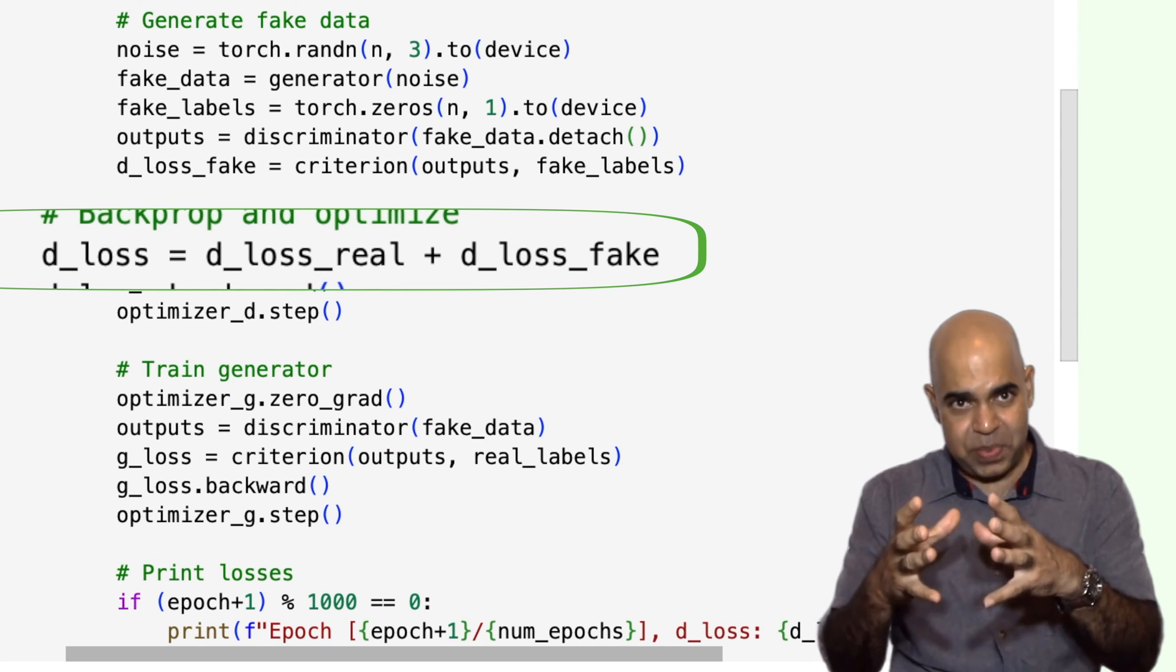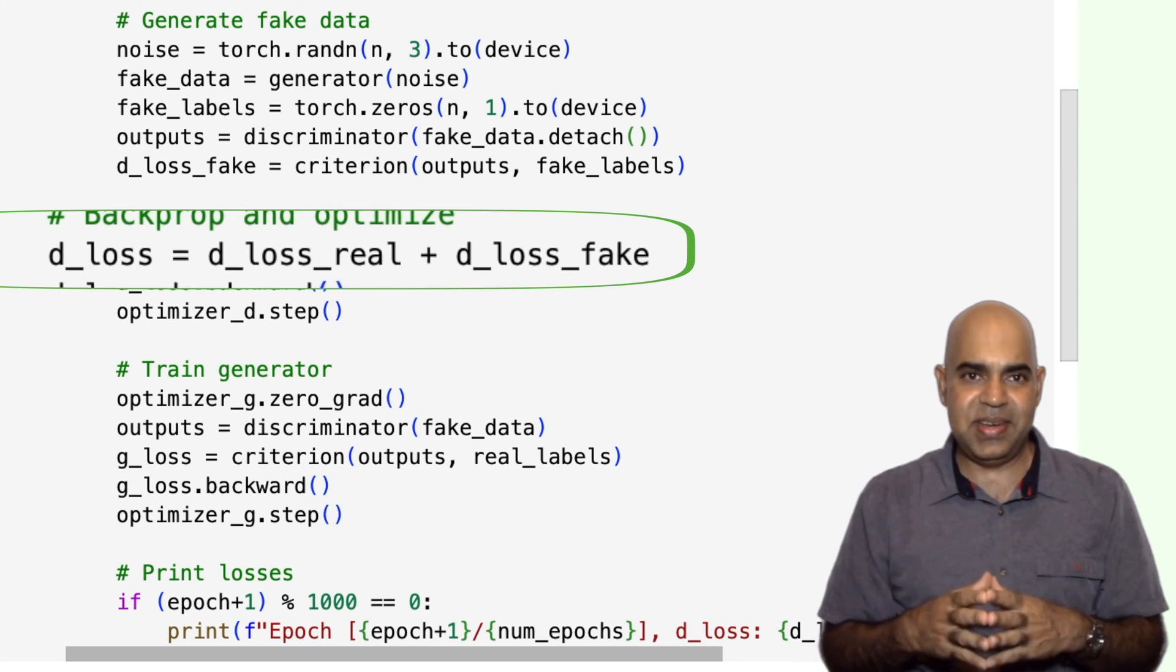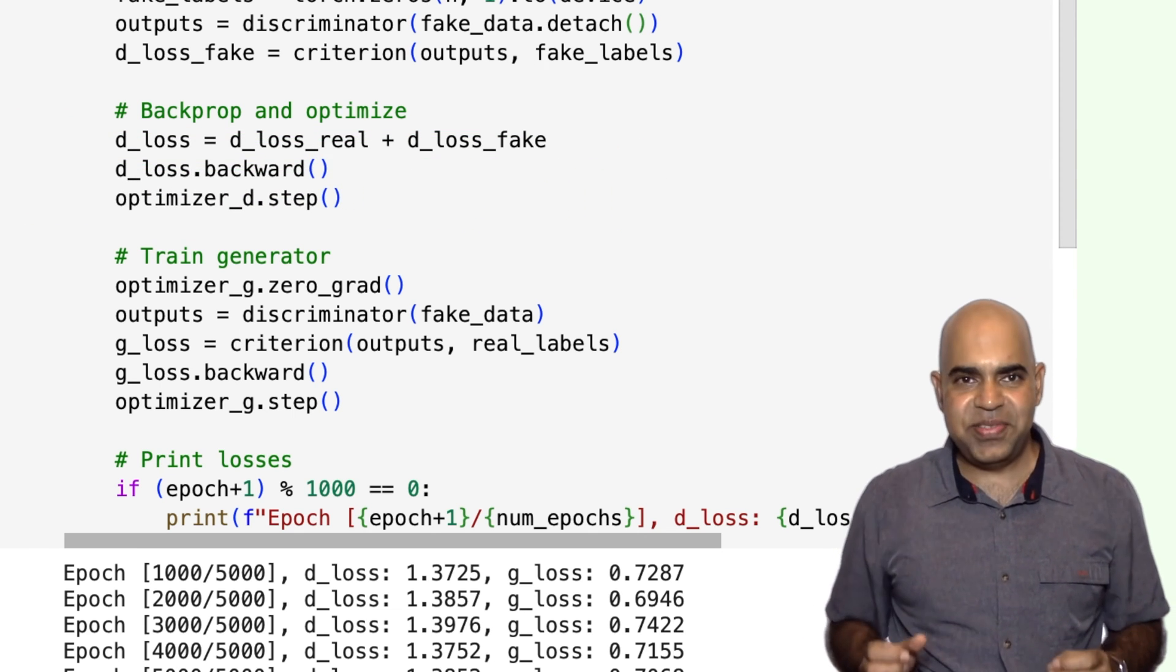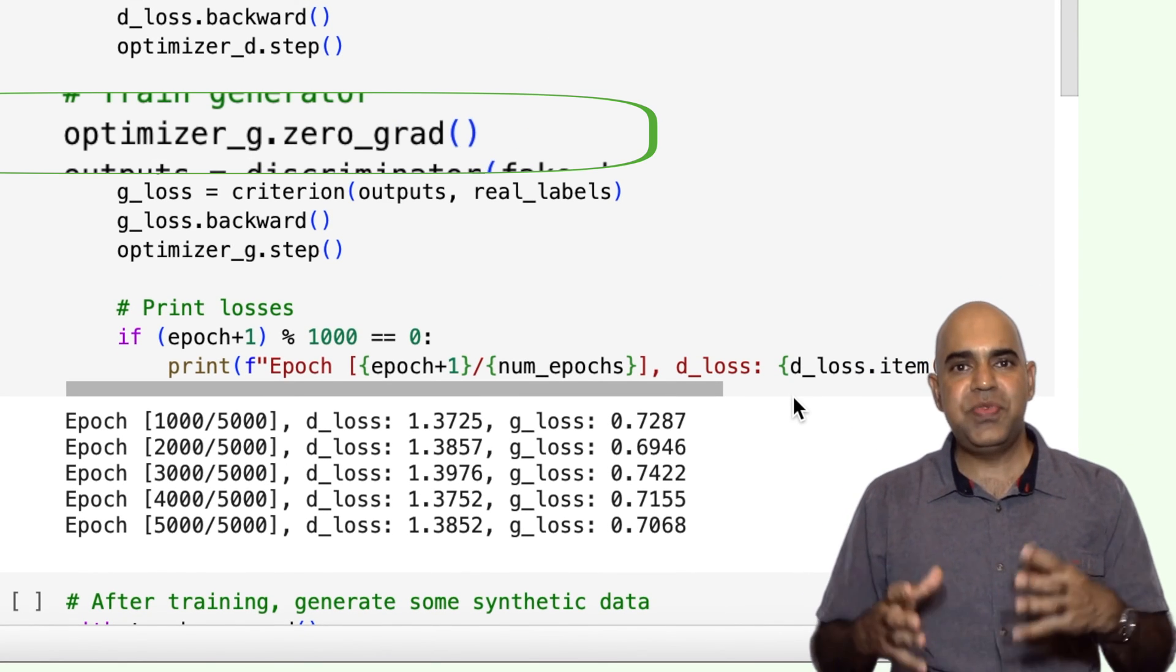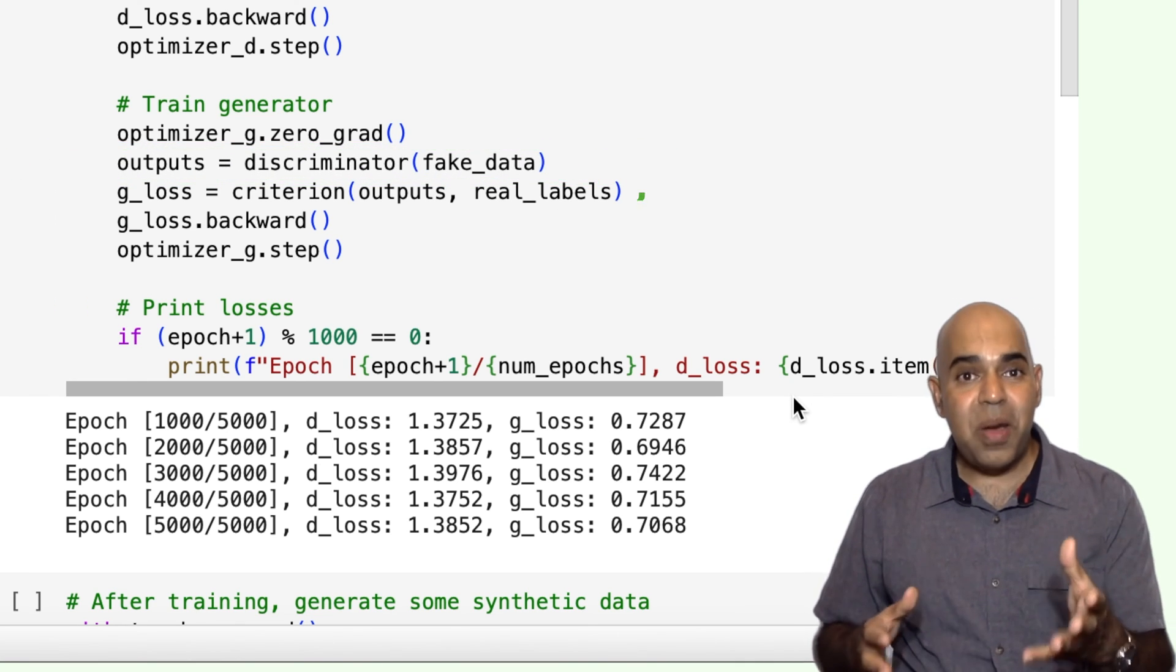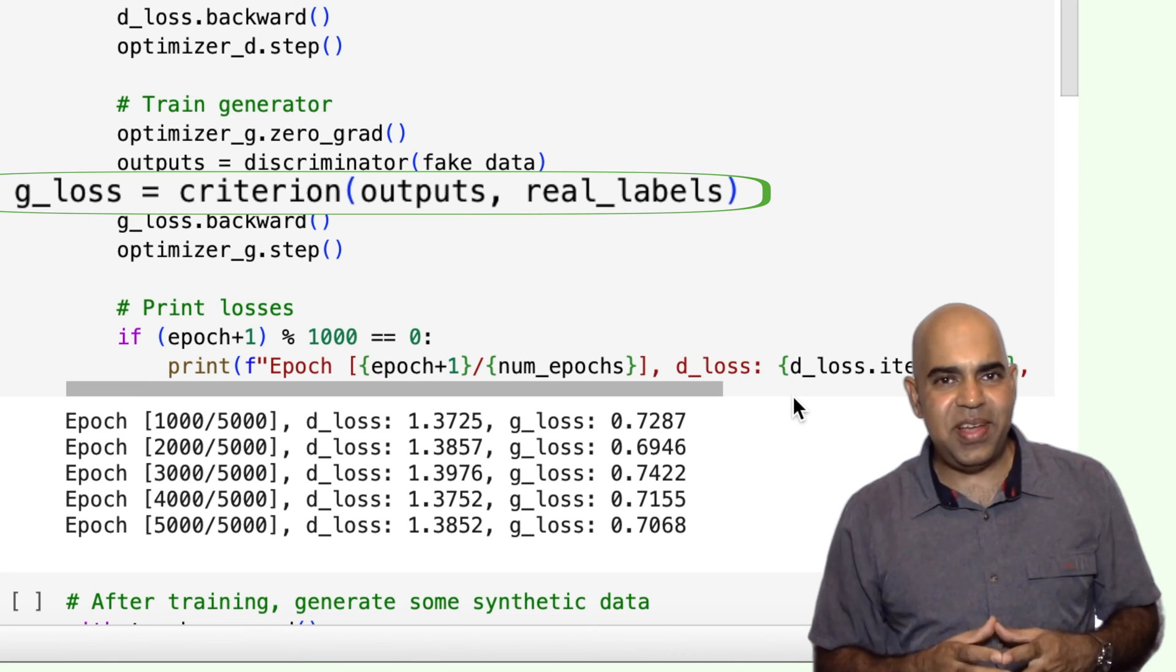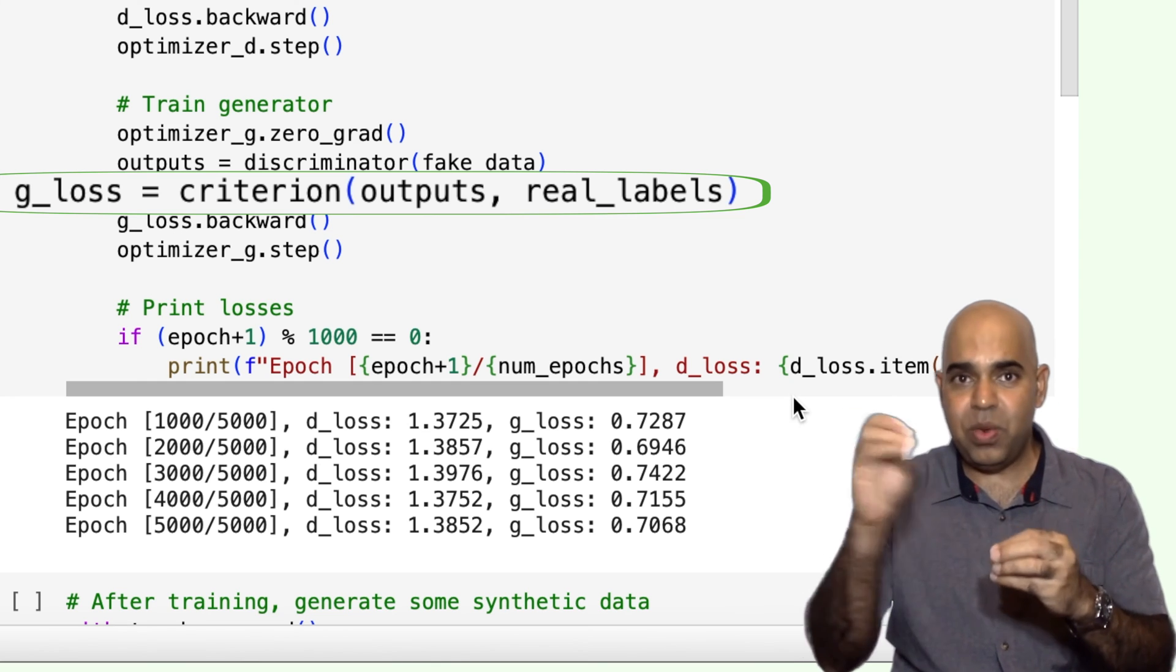The total loss for the discriminator is the sum of the losses for the real and fake data. Then we compute the gradients for the discriminator and update the discriminator's weights. We have trained the discriminator. Now we need to train the generator. We reset the gradients for the generator and get the discriminator's predictions for the fake data. We compute the generator's loss. The goal of the generator is to make the discriminator believe that the fake data is real. So, when calculating the loss for the generator, we use the label 1.